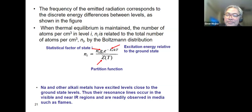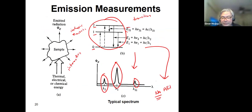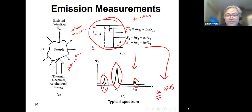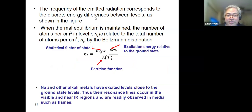A specific example: sodium in atomic emission spectroscopy. The sodium atoms are excited in a flame by collisional processes, and they emit characteristic radiation. The frequency of the emitted radiation corresponds to discrete energy differences between levels as shown in the figures.